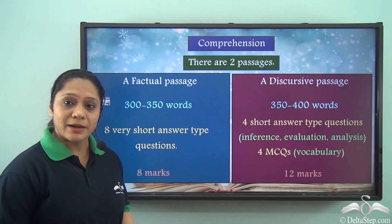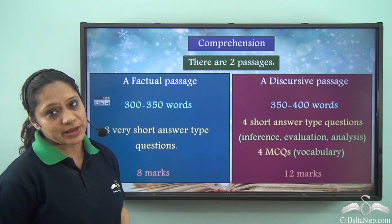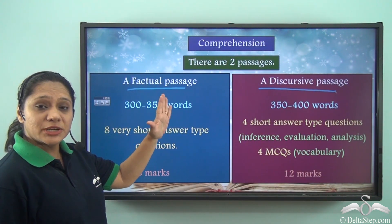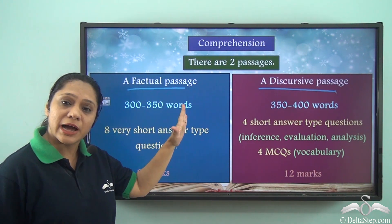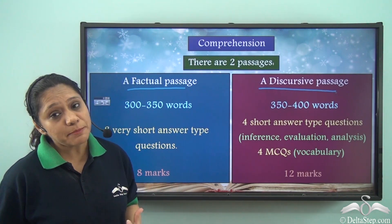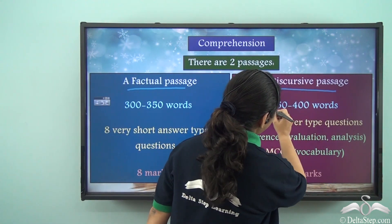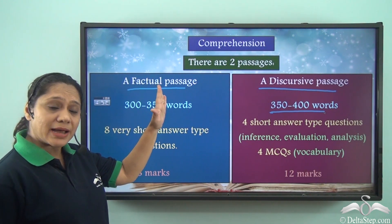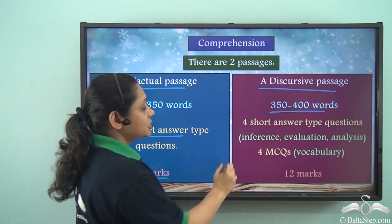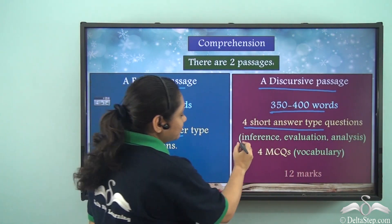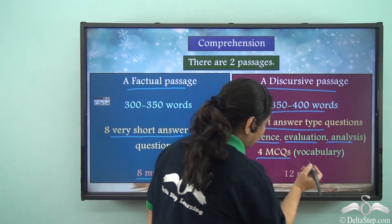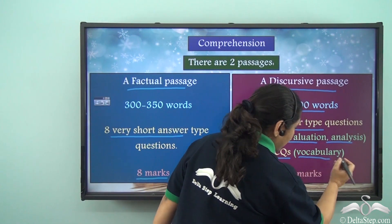In the CBSE Class 10 board exams, there are two passages given for the comprehension exercise. One is a factual passage, based on facts, of 300 to 350 words. The other is a discursive passage, which involves a particular discussion and can have many subtopics; this passage is 350 to 400 words. The factual passage has eight very short answer type questions worth eight marks, and the discursive passage has four short answer type questions that can relate to inference, evaluation, or analysis of the topic.